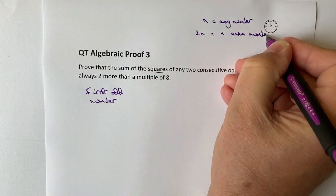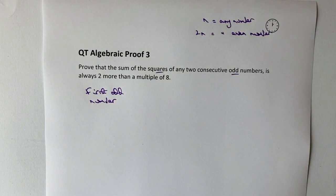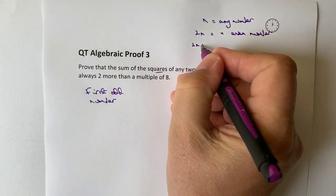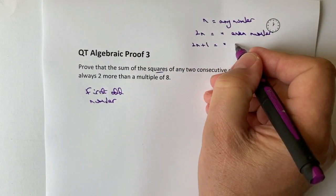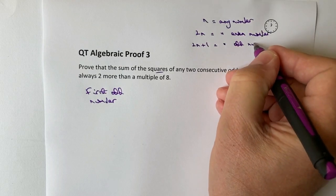Now, if I've got an even number and I add one to it, it means I've got my odd number. So 2n plus 1 is equal to any odd number.